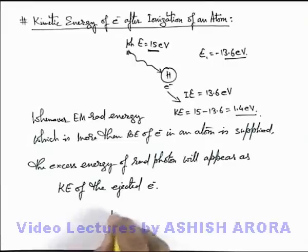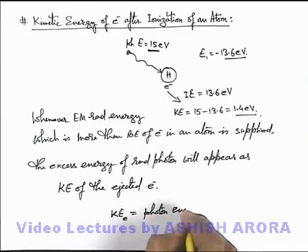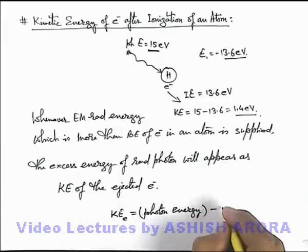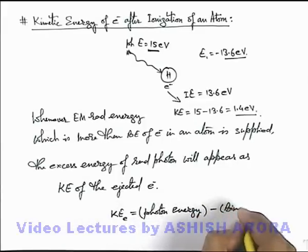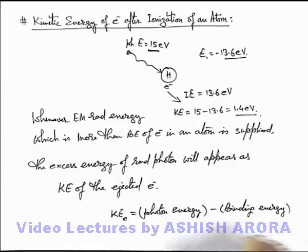So in this situation, kinetic energy of ejected electron can always be written as photon energy which is supplied minus the binding energy of electron, or we can also write ionization energy of electron in the respective state. This is the way how we calculate the kinetic energy of electron after ejection.